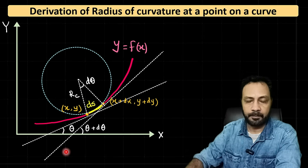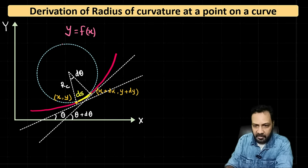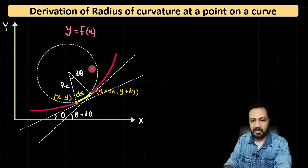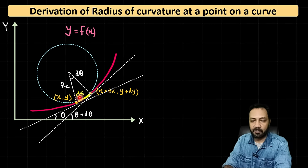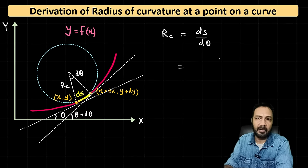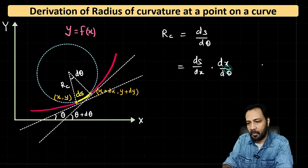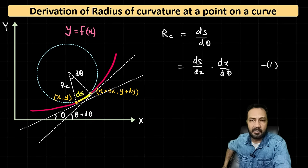Now the geometrical construction is done. On the next page: the arc length ds subtends an angle dθ at the center of the best fitting circle with radius rc. So we can write rc = ds/dθ. Applying the chain rule: rc = (ds/dx) · (dx/dθ). We will calculate ds/dx and dx/dθ separately and combine them to get rc.